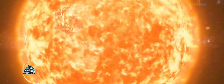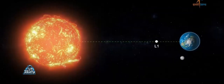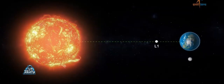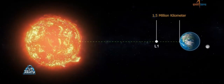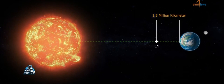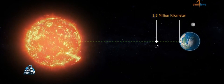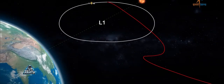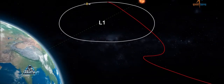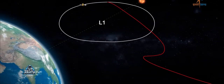The James Webb Space Telescope orbits the L2 point. At Lagrange points, gravity is balanced between two large bodies.